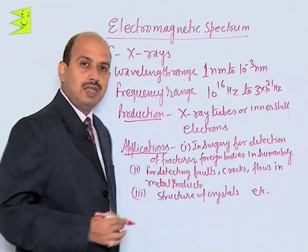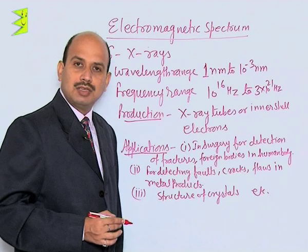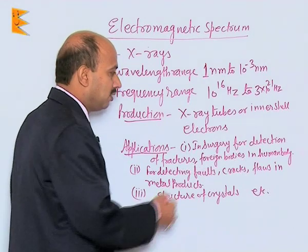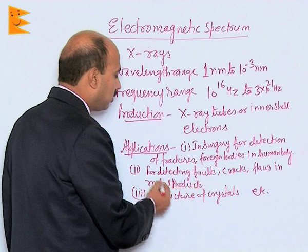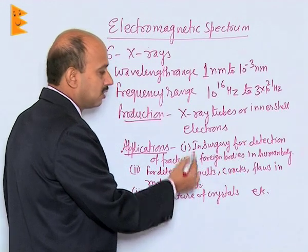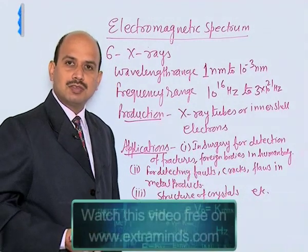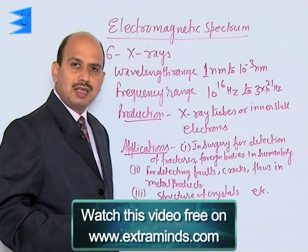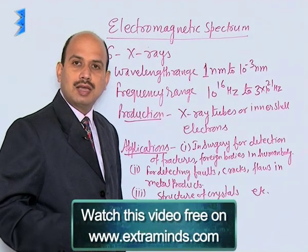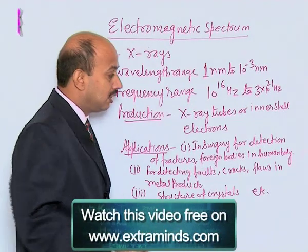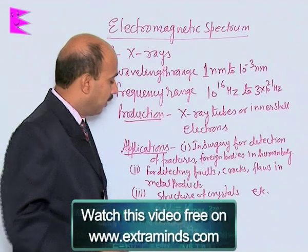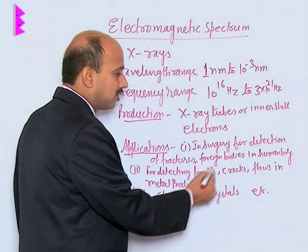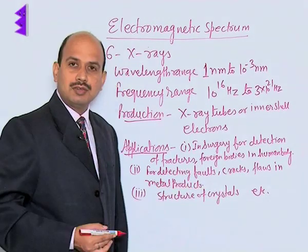These rays have very important applications. One of them — a very important one — is in surgery for detection of fractures and foreign bodies like bullets inside the human body. So, whatever fracture is in the bones inside the body can be detected by only X-rays. Also, for detecting faults, cracks, and flaws in the metal products.